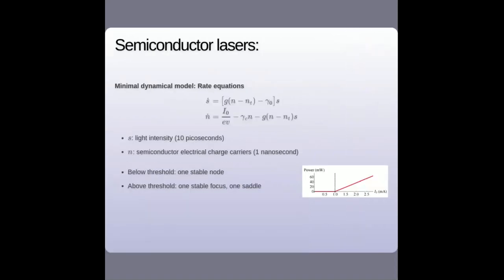This is the kind of neuron we want to study in photonics. We work with semiconductor lasers. A basic model uses rate equations for laser intensity — driven by losses and gain via interaction with an atomic population — and the atomic population evolves on a slower time scale, relaxing to zero, pumped by external energy, and depleted by amplification of light. Below laser threshold there is one stable node; above threshold there is one stable focus (laser on) and one saddle point. This does not give an excitable system, a neuron, at all.